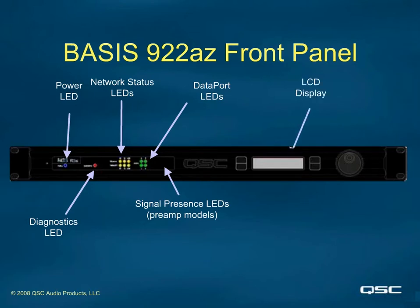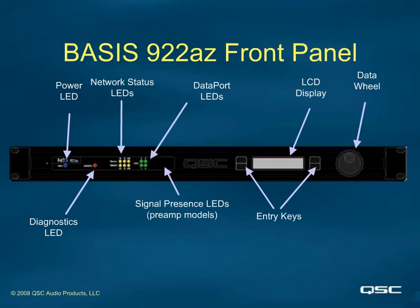Yellow indicates a good signal to noise ratio, while red indicates A-to-D clipping. The LCD panel, the entry keys, and the data wheel encoder can all be used to view various functions of the Basis unit. Some functions and parameters, such as configs and snapshots, can be recalled, or IP addresses can be viewed and even changed from these buttons and LCD. A security password may be used to lock these functions, allowing screens to be viewed but not allowing changes without the password.